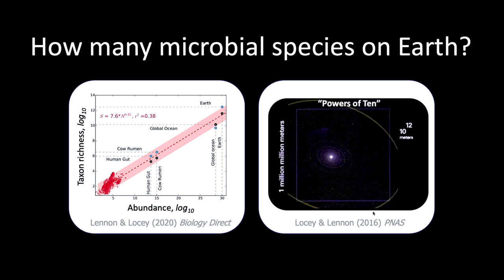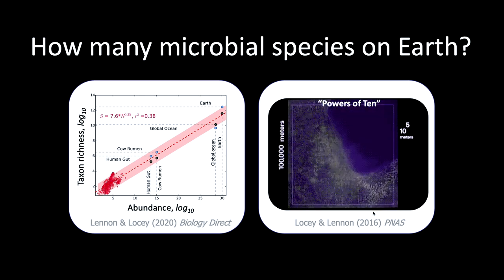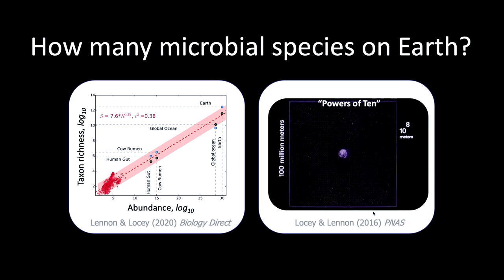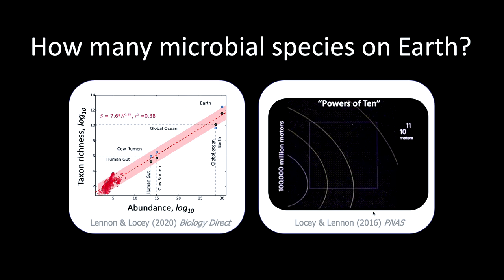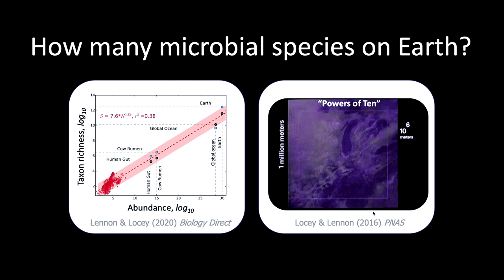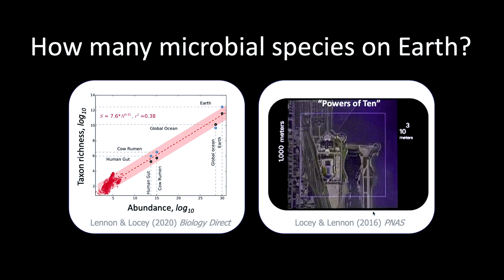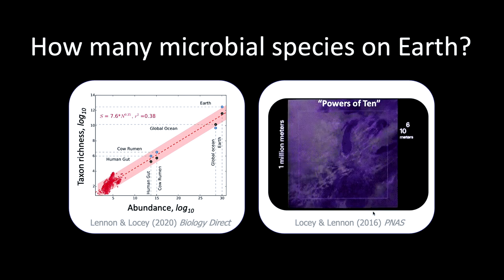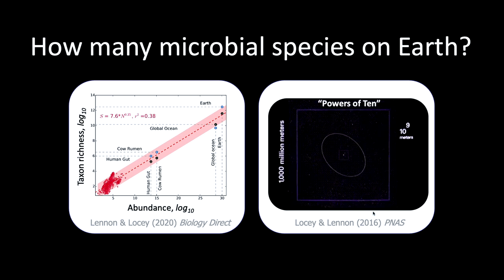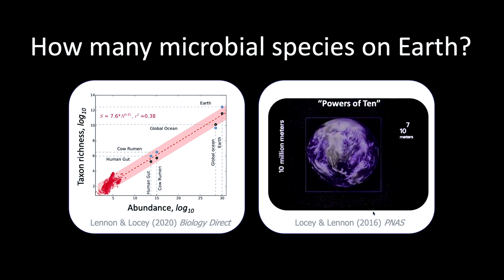Are there general rules we can apply to all domains of life? That's a type of question that, due to methodological limitations, has been inaccessible largely because of the way in which we study microbes — up until probably 15 years ago and the advent of high-throughput sequencing, which allowed us to sample at appropriate depths to characterize the diversity of very abundant microbial assemblages.